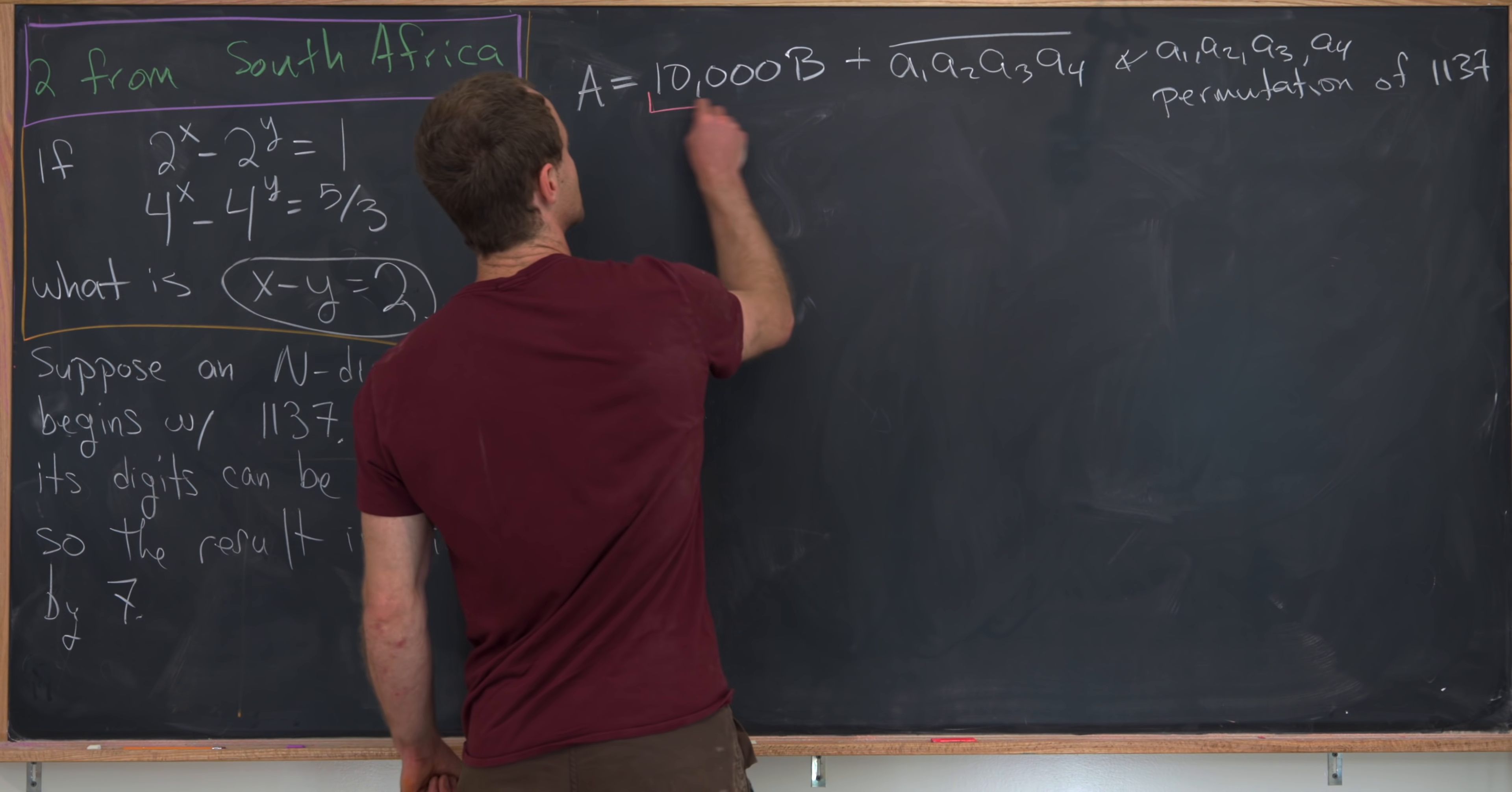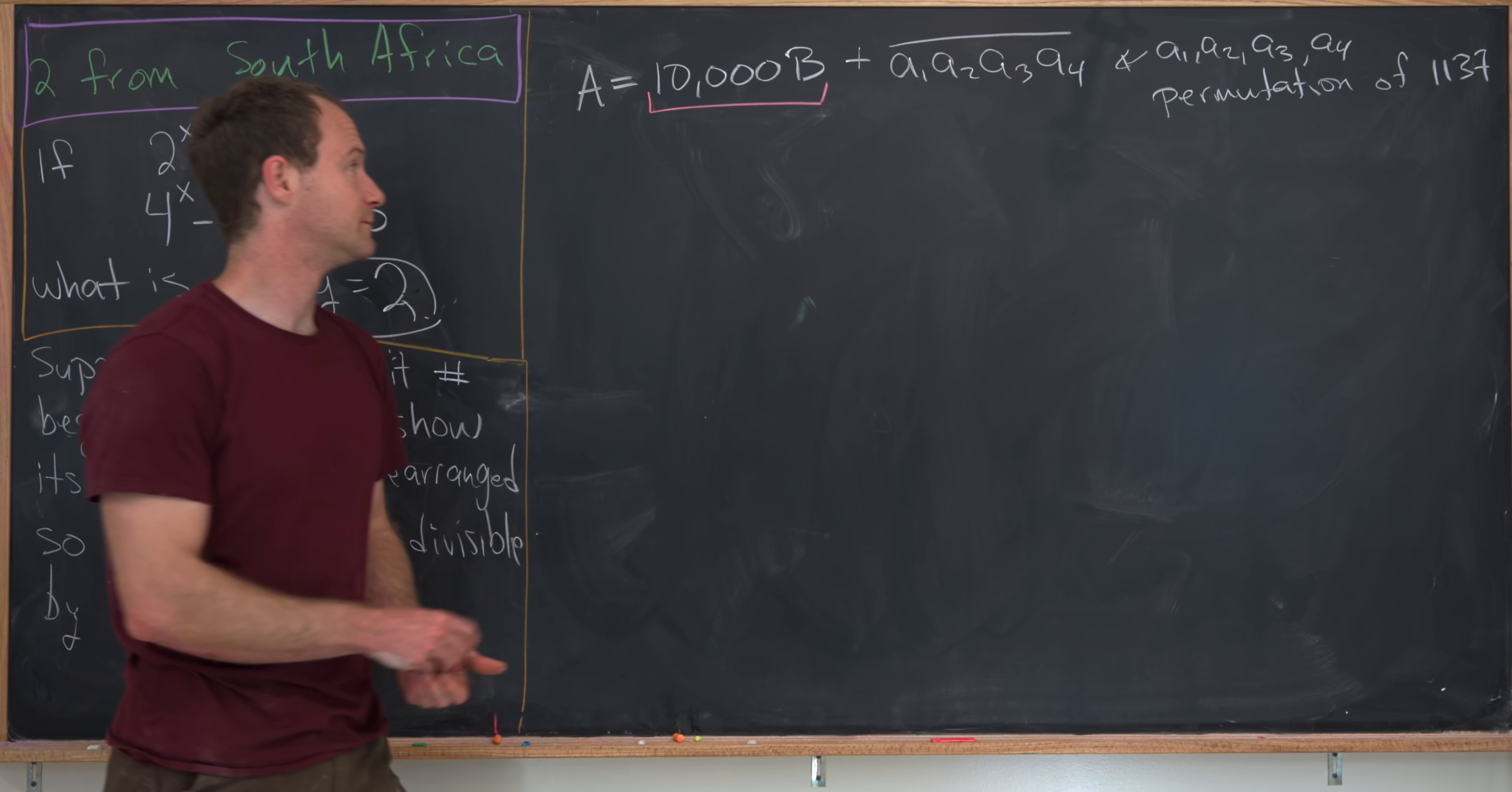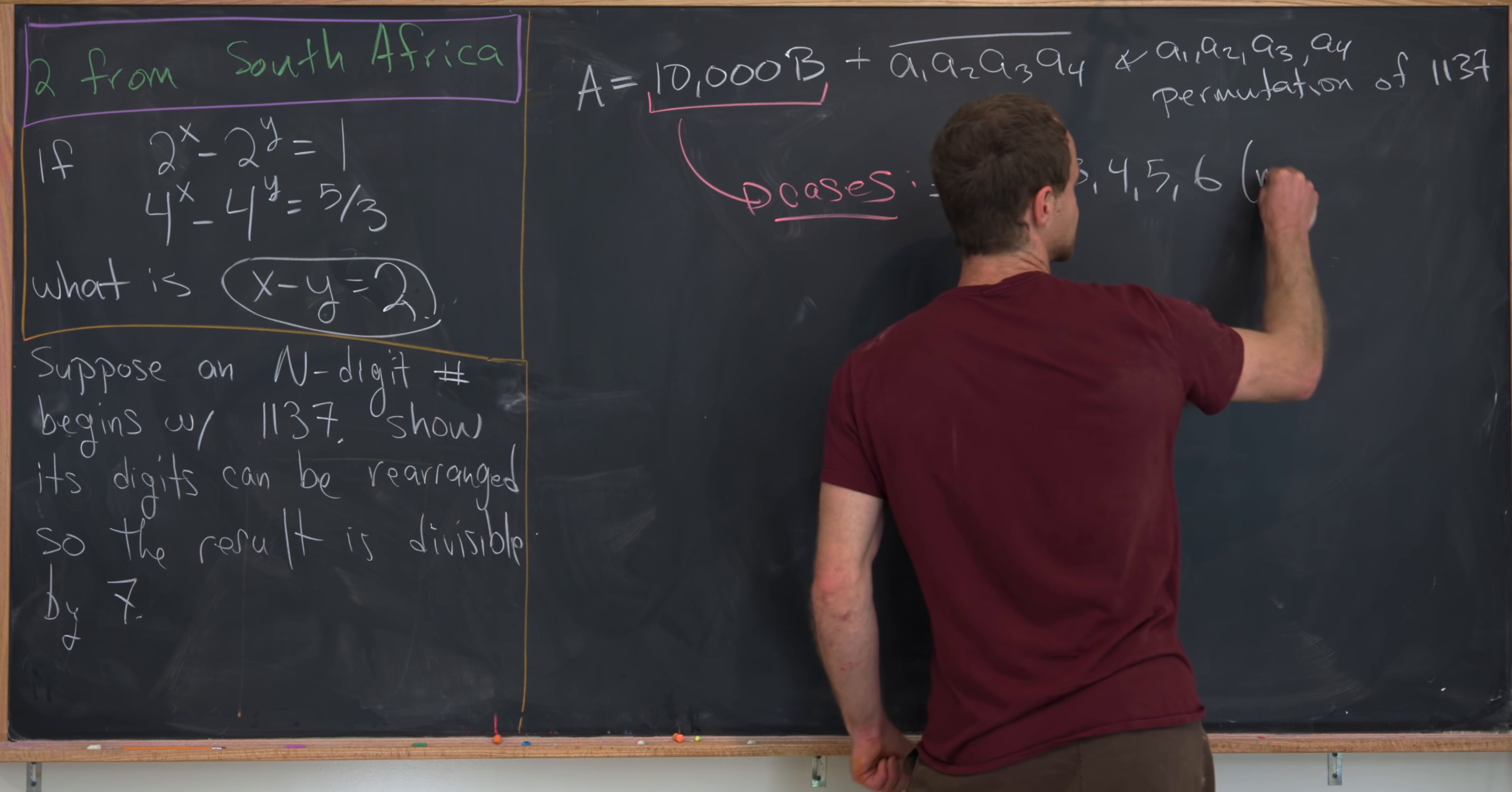Now we're going to break this into cases and then simultaneously use the notion of modular arithmetic. So the cases that I need to break this into are built around the remainder after dividing this 10,000 times b by 7. In other words, their residue modulo 7. So like I said, these are the cases when this object is congruent to 0, 1, 2, 3, 4, 5, or 6 mod 7. So let's add that in here.